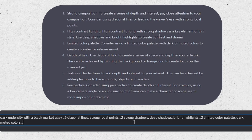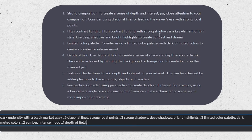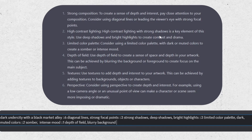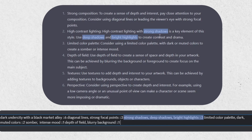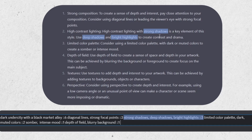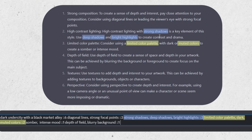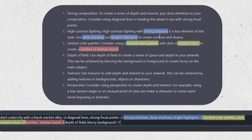It's about recognizing which elements are important for your style and what you're actually looking for. Group them up in a way that makes sense. For example, strong shadows, deep shadows, and bright highlights go together. A muted color palette and dark muted colors is one group; somber, intense, and smooth is another.